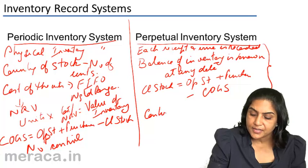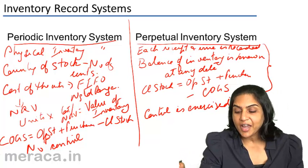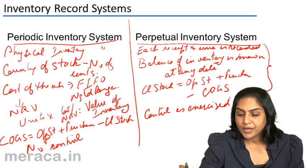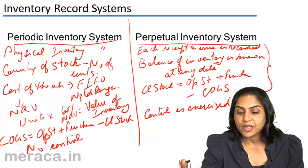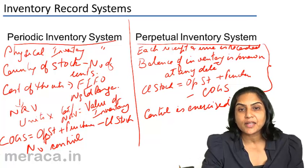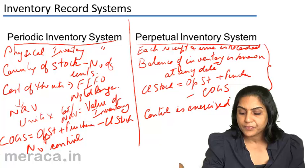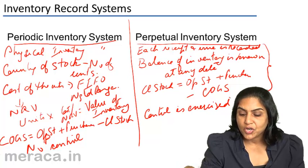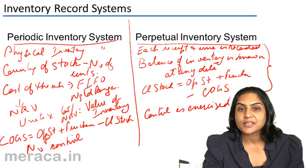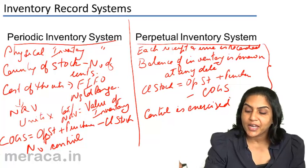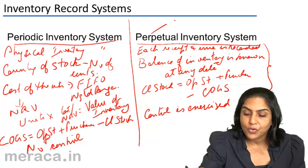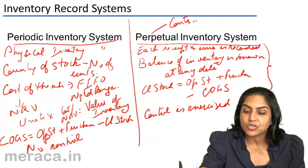Control is exercised because every receipt and every issue is recorded. Periodically, whenever stock is physically counted, it is verified with the records maintained in the store's ledger to ensure that the physical stocks actually exist as recorded. Therefore, much better control can be exercised. The perpetual inventory system works very well with a system of continuous stock take.